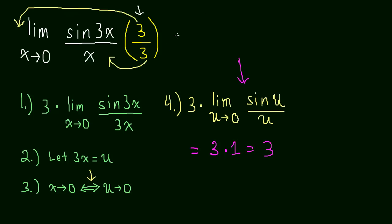Let me just rewrite it so you can really see what the limit was and what the answer is. So the limit as x approaches 0 of the sine of 3x over x equals 3.